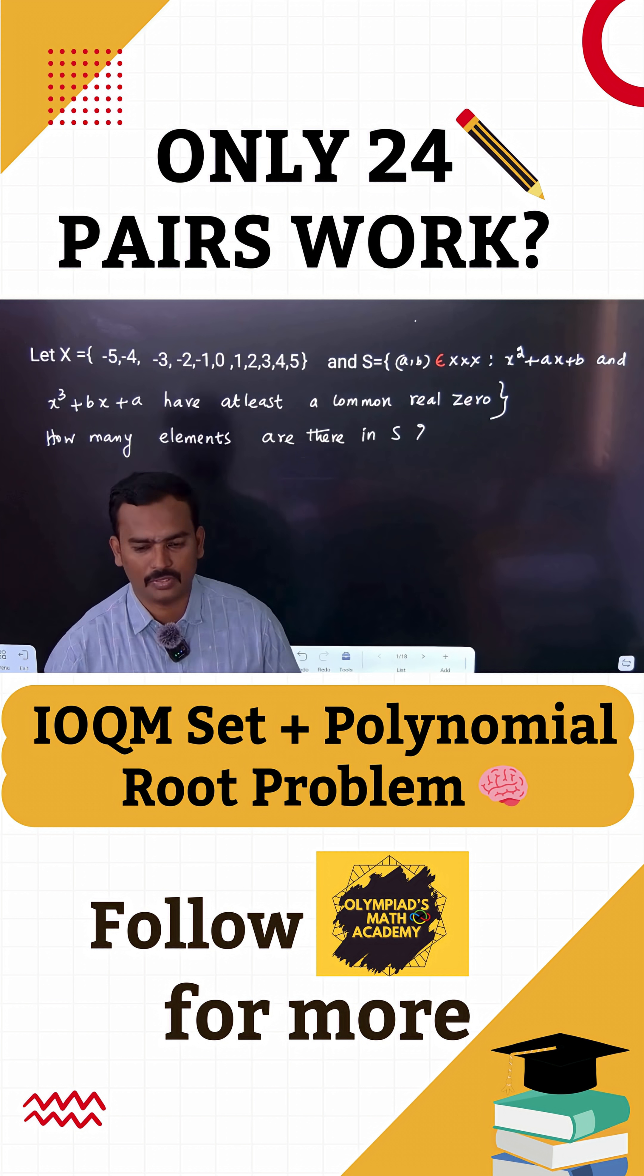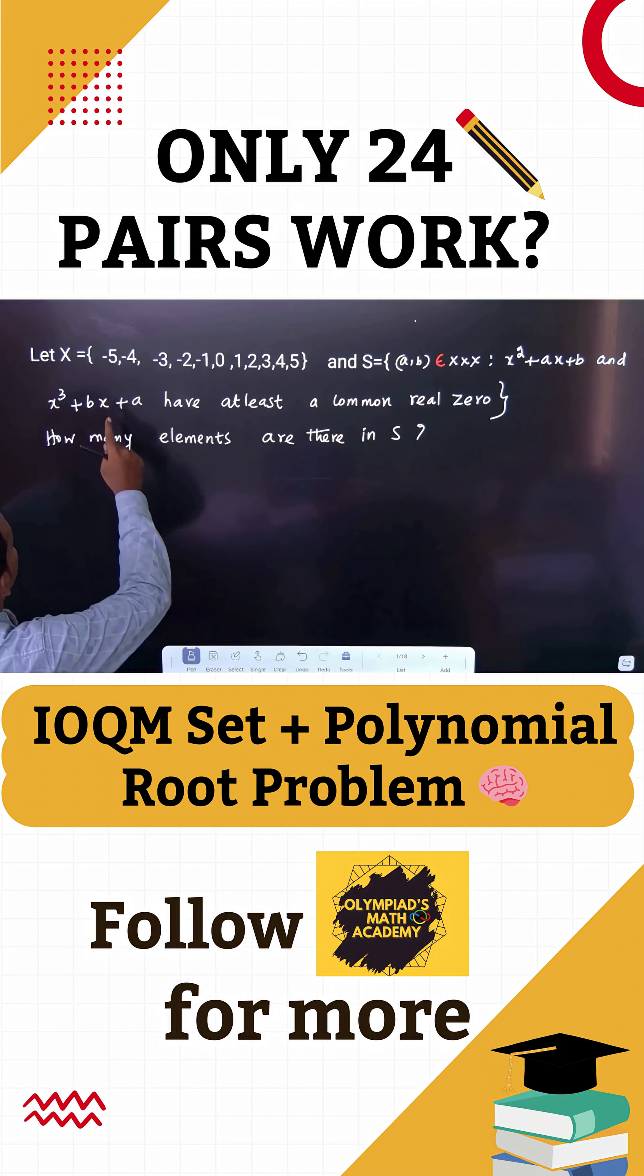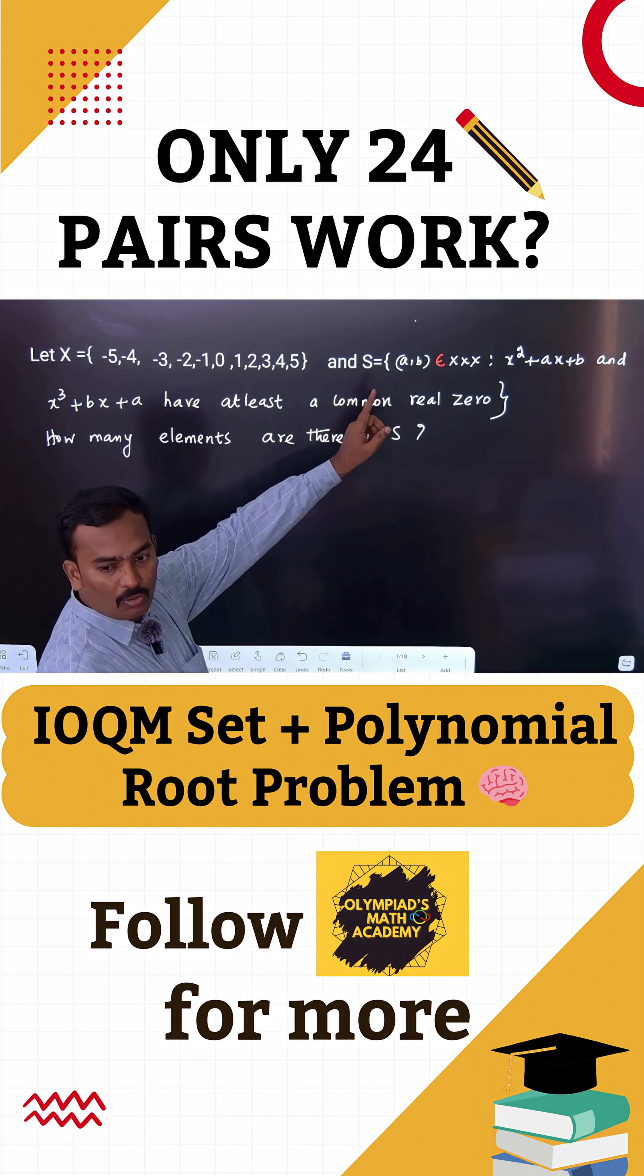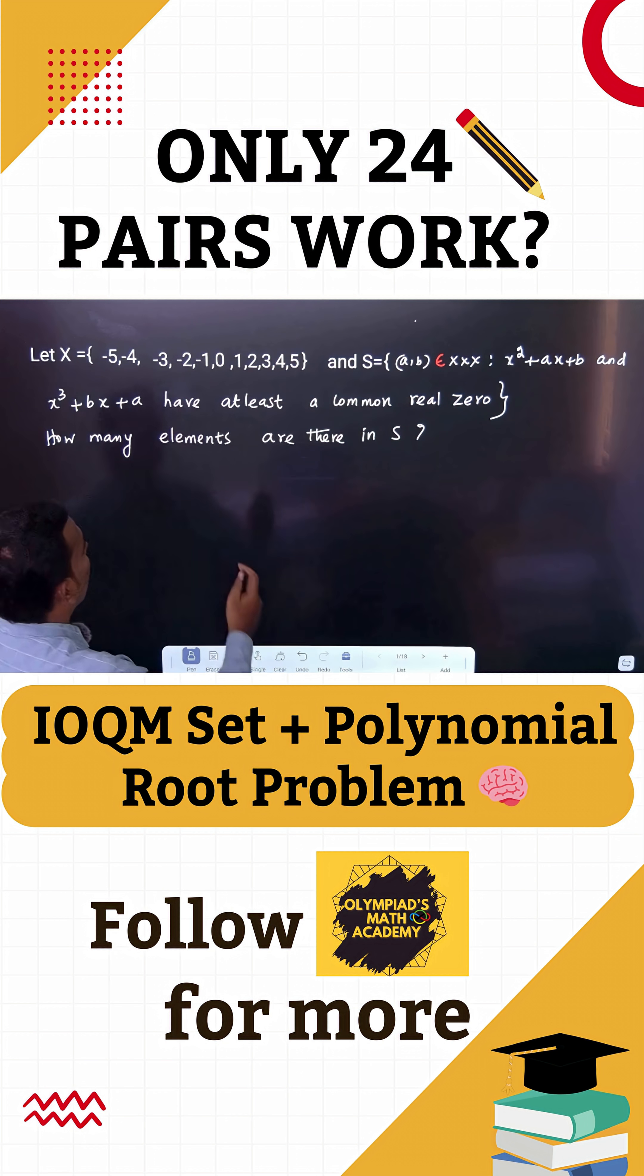This is a very interesting IOQM question. The first set X is the collection of all elements from -5 to +5, and S is the collection of all ordered pairs. The quadratic and cubic equations have at least one common real zero.